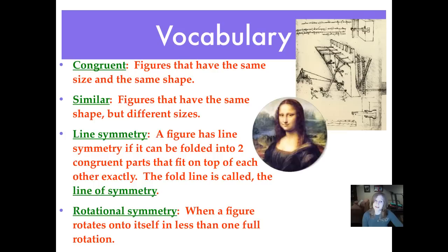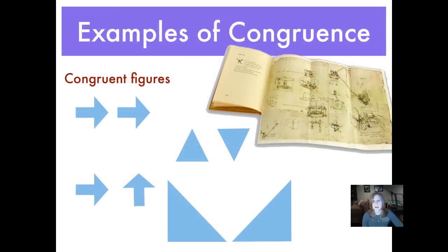Line symmetry is when you can fold a figure into two equal parts — same size, same shape — and they would fit on top of each other exactly, with their edges lining up perfectly. The fold line is called the line of symmetry. Many shapes have lines of symmetry, and many shapes have more than one. Rotational symmetry is when a figure rotates onto itself in less than one full rotation.